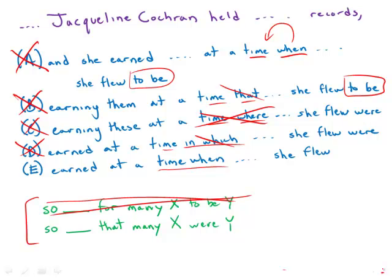The only answer left is E. E is direct, it's clear, it's unambiguous, it has no grammatical mistakes, and it is by far the strongest answer. A top flying answer indeed.